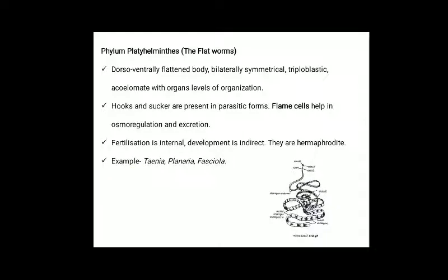Phylum Platyhelminthes or flatworms: they have a dorsoventrally flattened body, bilaterally symmetrical, triploblastic, acoelomate with organ level of organization. Hooks and suckers are present in parasitic forms. Flame cells help in osmoregulation and excretion. Fertilization is internal. Development is indirect. They are hermaphrodites. Examples: Taenia, Planaria, Fasciola.